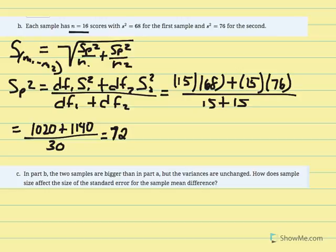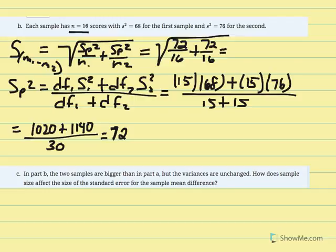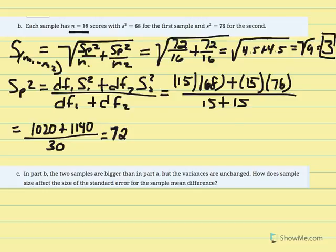Now calculating the estimated standard error of the mean difference: pooled variance 72 over n1 equals 16, plus 72 over n2 equals 16. Taking them as separate fractions: 72 over 16 equals 4.5, plus 4.5, equals the square root of 9. The square root of 9 equals 3. So the estimated standard error of the mean difference, given sample size increased to 16, is now equal to 3.